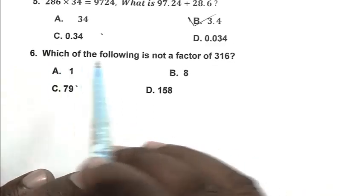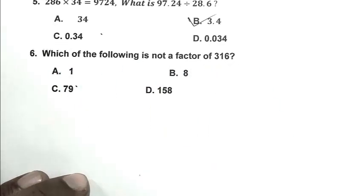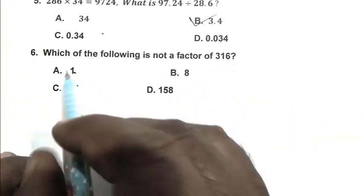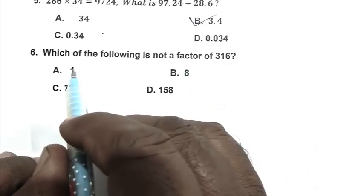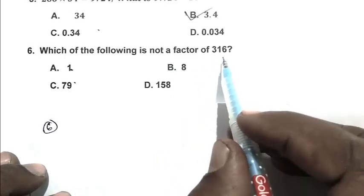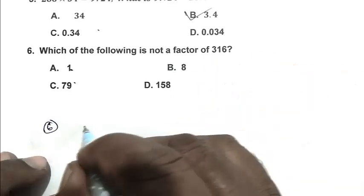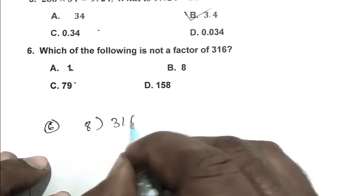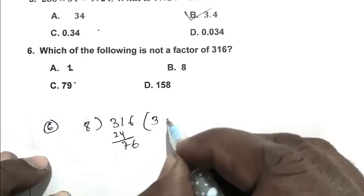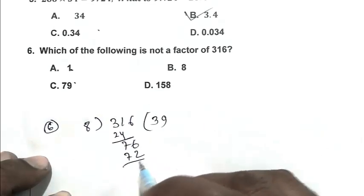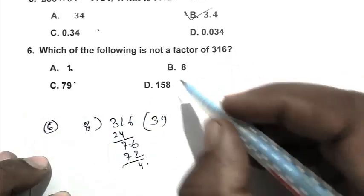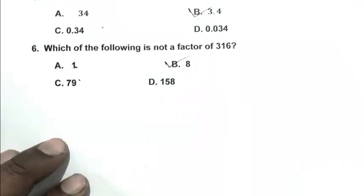Question number six: which of the following is not a factor of 316? So we know that 1 is a factor of 316 because 1 is a factor of every number. After that, we calculate: is 8 a factor of 316 or not? So we divide 316 by 8. There is 4 remainder, so 8 is not a factor of 316. So B is the right answer.